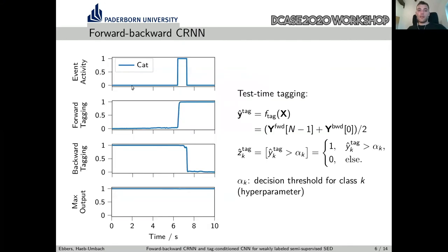To further illustrate this, we again have the activity 'cat.' We see that the forward tagging actually learns to make the positive prediction directly as soon as the event occurs. Same for the backward tagging, only that the signal is processed in the backward direction — as soon as the event appears, which is at the offset here, the backward tagging model makes the positive prediction. With the maximum operation, we see at the bottom that we are able to make a tag prediction at each point in time.